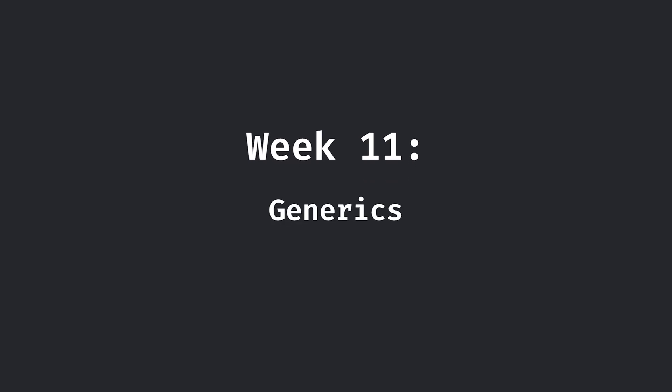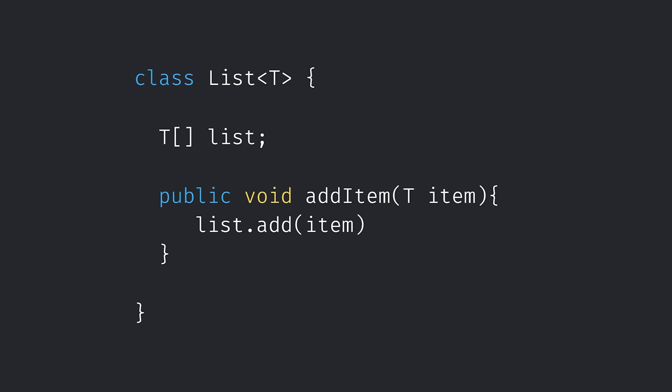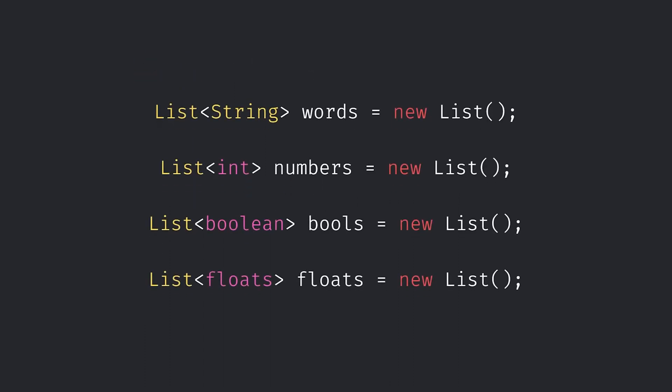Moving on to the last week, week eleven, we learned about generics. Generics allow us to define classes to work with multiple data types rather than just one. As an example, if we had a list class that originally could only hold integers, we can use generics to make it a generic class that can take a list of any data type — strings, integers, booleans, whatever it may be — but it's the same list class. This allows us to not have to write out a bunch of different classes that do the same thing just for different data types, resulting in much more flexible and reusable code.